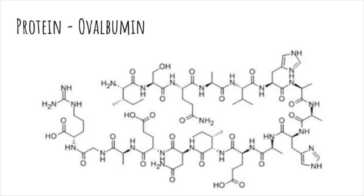There are four main proteins in egg whites. The first one we're going to talk about is ovalbumin, which represents almost 60% of the whole egg, and it's almost a spherical glycophosphorus protein.